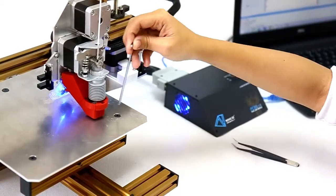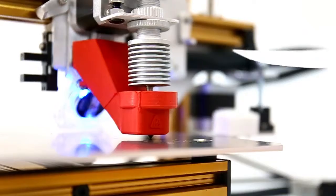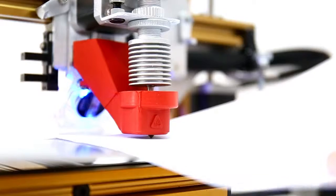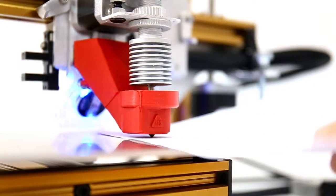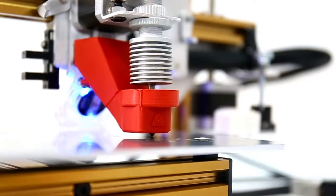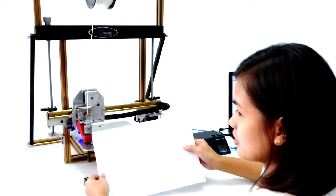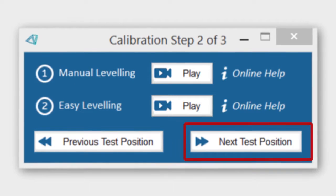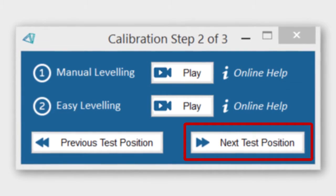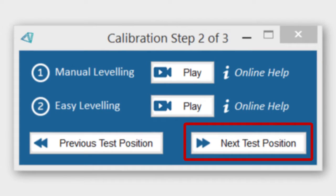Repeat the process until the proper adjustment is obtained. This would mean that the paper can now pass smoothly through the nozzle and the print plate. To proceed with the video tutorial, click the Next Test Position button for the last step.